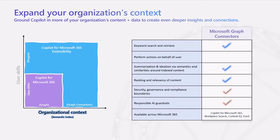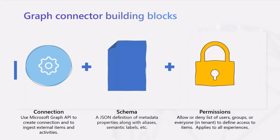Everything about Microsoft Graph Connectors is about doing keyword search and retrieve, doing lexical and semantic search and retrieve, getting summarization, ideation, ranking and relevancy, and so on. There are only three things you need to really consider when it comes to Microsoft Graph Connectors: the connection, the schema, and the permission.